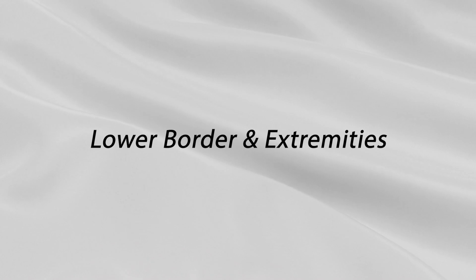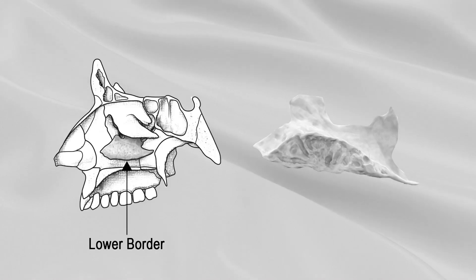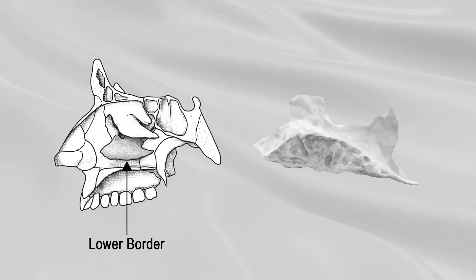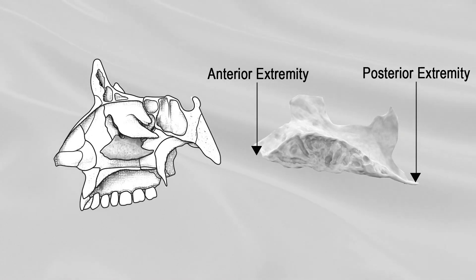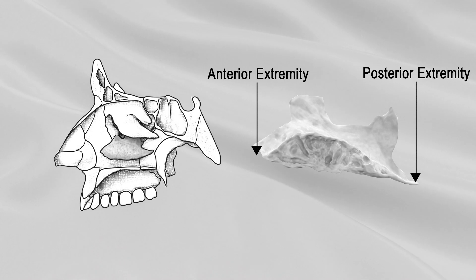The lower border is free, thick, and cellular in structure, especially in the middle of the bone. Both extremities are pointed, the posterior being the more tapering.